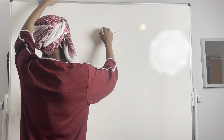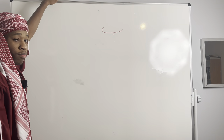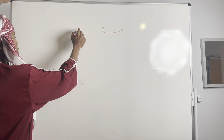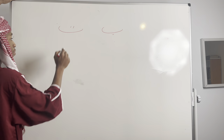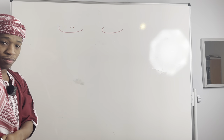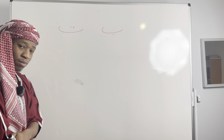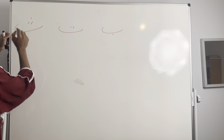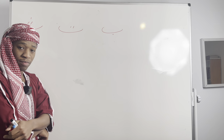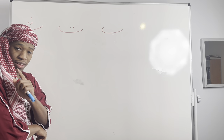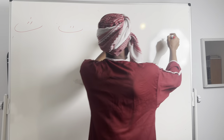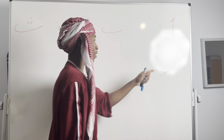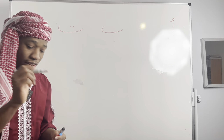Which letter is this? Ba. Good. What about this one? Ta. Right. This one? Tha — with your tongue. And the first letter we learned yesterday, if you can remember, was Alif. Good.